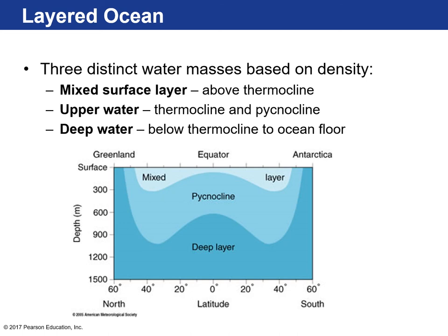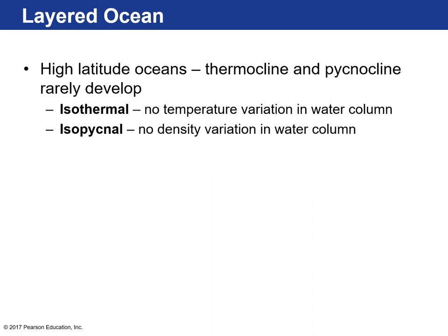Our ocean has a three-layer structure: a mixed surface layer above the thermocline, the upper water or pycnocline/thermocline layer, and then the deep water. At high latitudes, the deep water reaches the surface — that's why falling in the water there is so dangerous, causing hypothermia quickly. At high latitudes, the thermocline and pycnocline rarely develop; these are called isothermal or isopycnal, with no density variation.